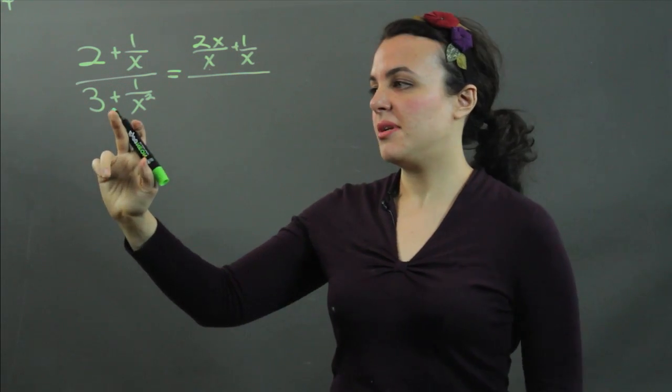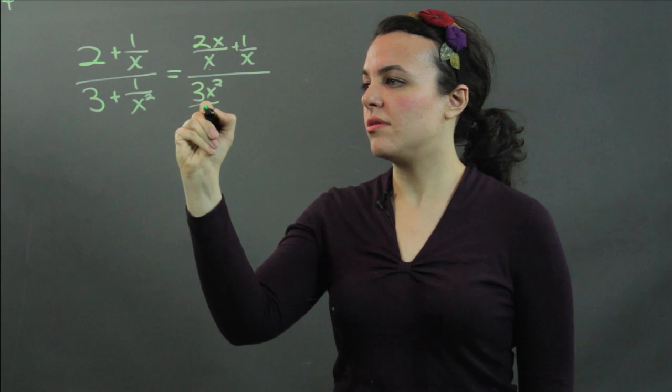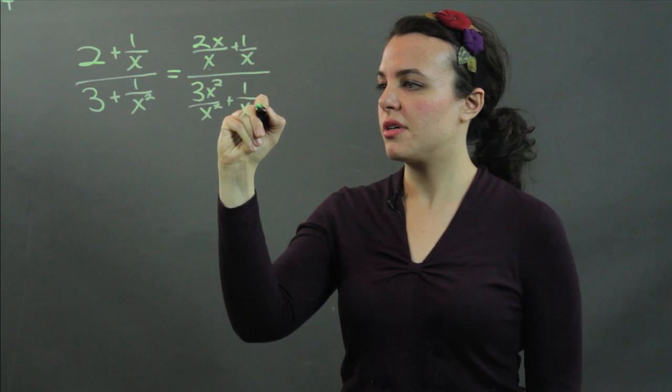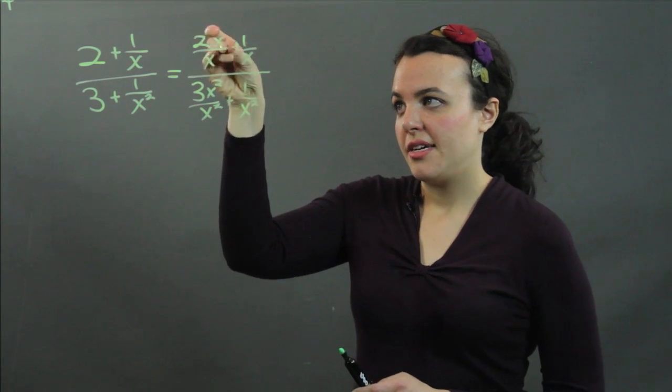The common denominator here is x². So we have (3x²/x²) + (1/x²). Now I'm going to simplify by adding these fractions.